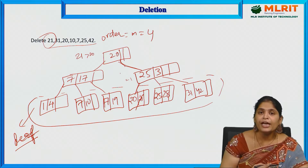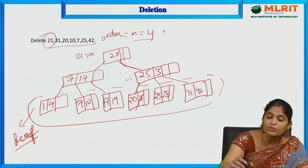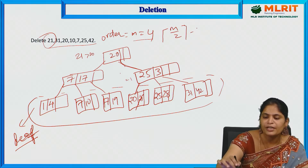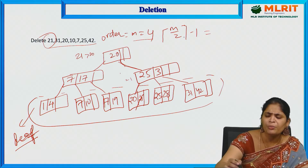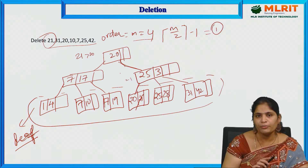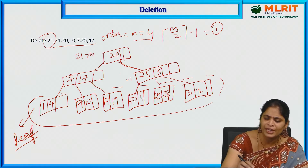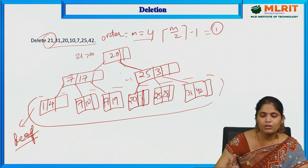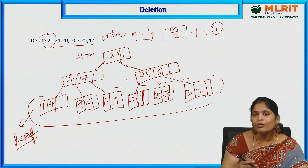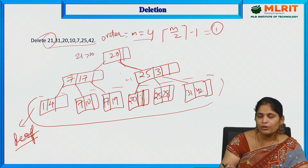We must maintain the minimum number of keys. For M equal to 4, the minimum number of keys is ceiling of M divided by 2 minus 1, which equals 1. So it is mandatory to maintain 1 key per node. After deleting 21, the node still has 20, so the minimum key condition is satisfied. We also check if 21 is in the index node — if so, we need to delete it from there and replace it from another node.